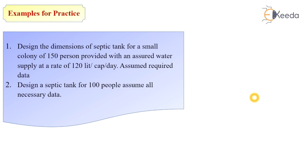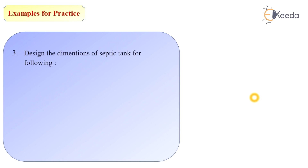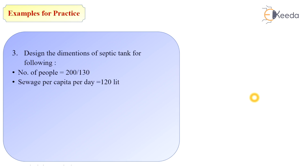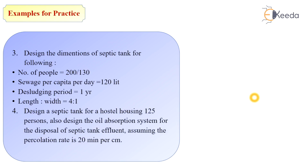Second practice example: design a septic tank for 100 people; assume all necessary data. Third: design dimensions of a septic tank for the following data — number of people either 200 or 130, sewage per capita per day is 120 liters, desludging period is 1 year, length to width ratio is 4 to 1. Fourth: design a septic tank for a hostel housing 125 persons, also design the soil absorption system for the disposal of septic tank effluent, assuming percolation rate is 20 minutes per centimeter.